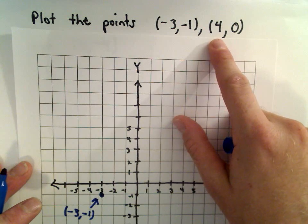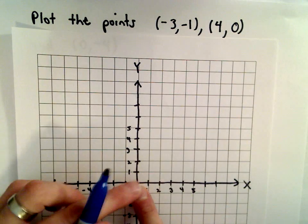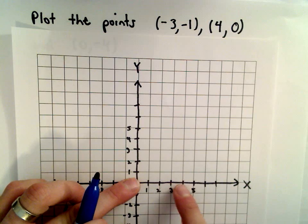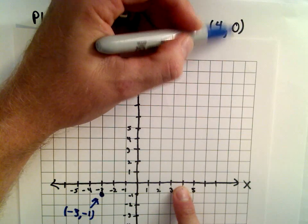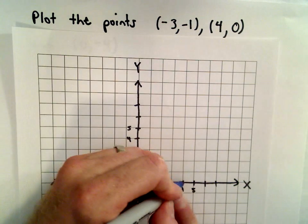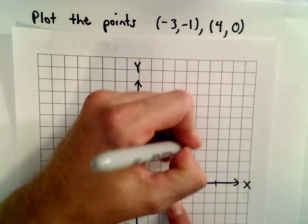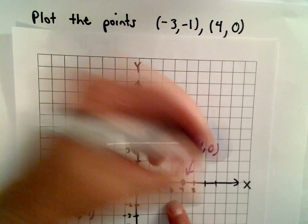The next point is 4 comma 0. From the origin, we'll go to the x-coordinate of 4, or 4 units to the right. For the y-value, it says don't go anywhere. Don't go up or down. So the point 4 comma 0 is sitting on the x-axis.